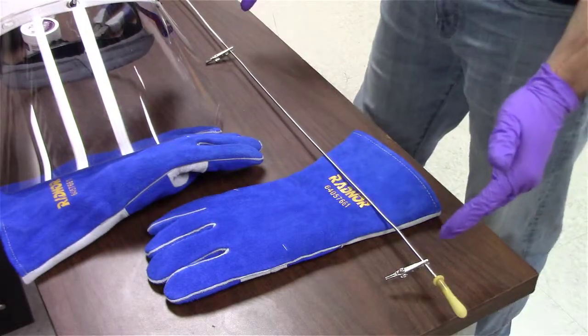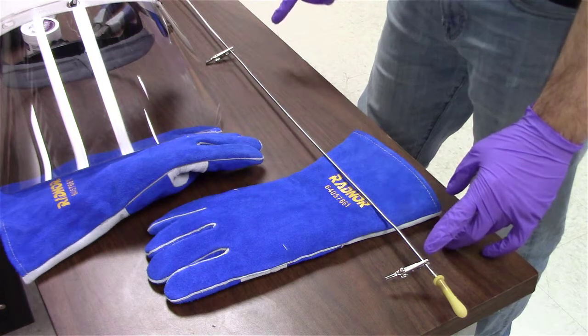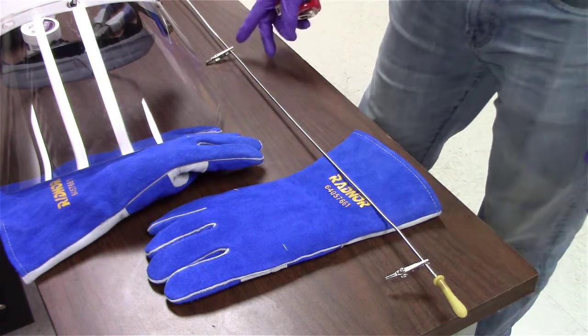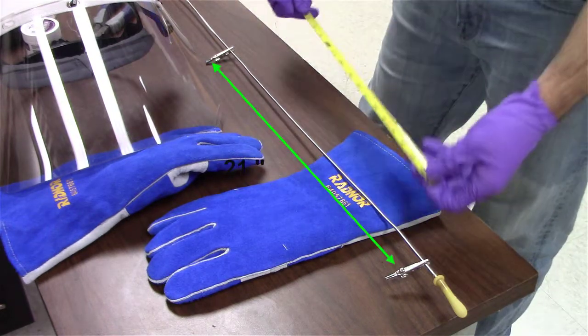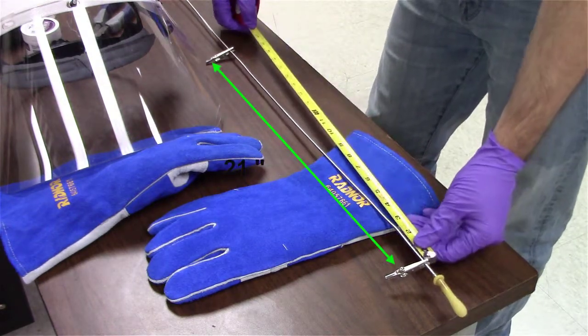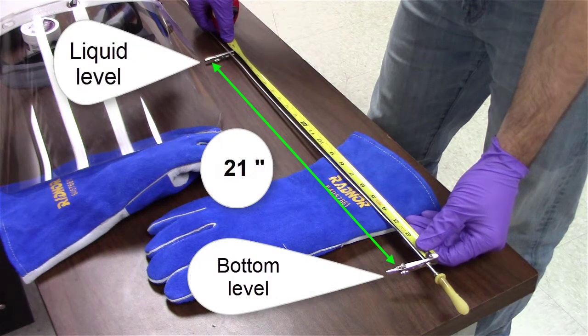Now I have the rod sitting on the table. This is the clip that we placed when we were at the bottom of the BGL. This is the clip that we placed when we got to the liquid level. What you want to do is use your tape measure to measure the distance between them. Right now, that is 21 inches.